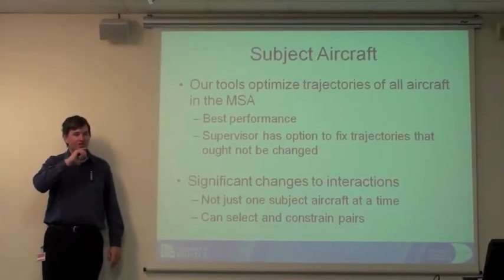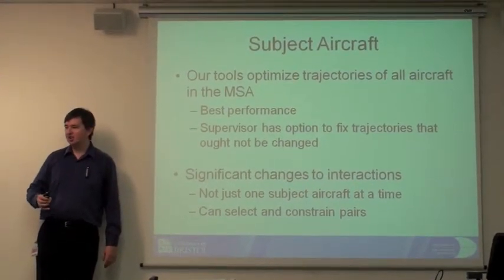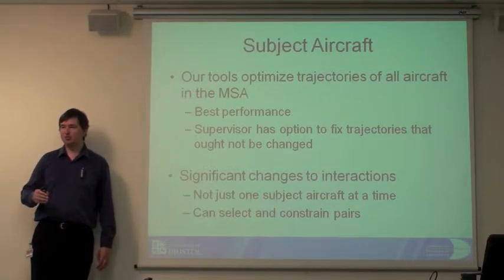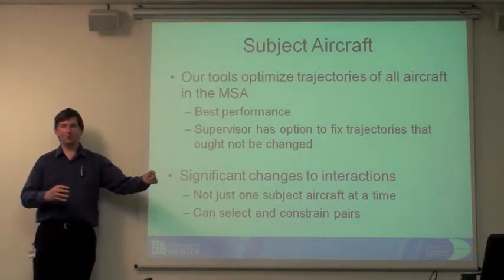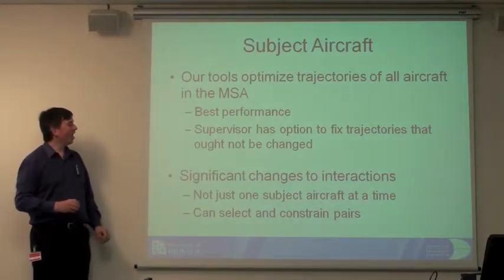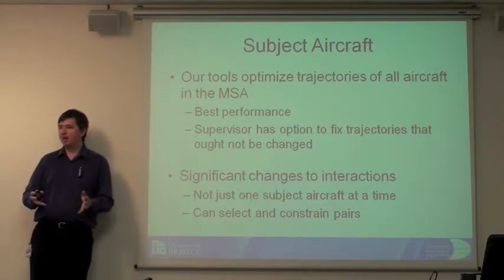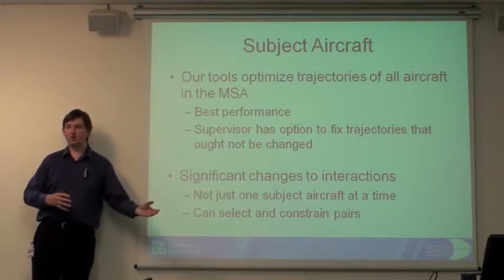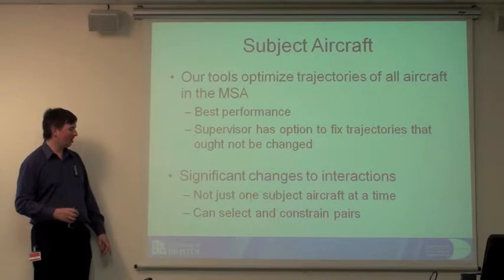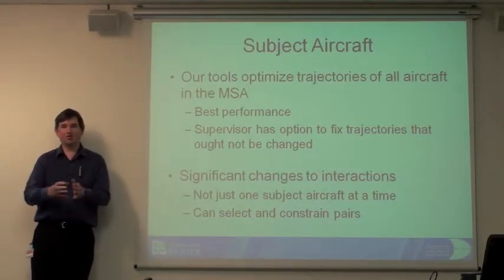Something we learned from discussions with NATS: the concept of the subject aircraft. What we do in the optimizer is optimize for everyone you haven't fixed, so multiple trajectories change simultaneously. Whereas the more familiar way of working is to identify one subject aircraft, make decisions for that one, and work with one at a time. I don't have a complete answer for this because it is a different way of working when an optimizer can change multiple things at once. There's a whole stream of work about how to avoid greediness and make things cooperative through multi-agent systems, but there are real challenges in exploiting this because you have to move away from thinking of just one aircraft at a time.